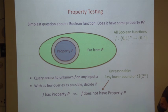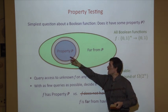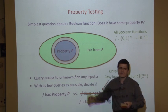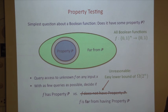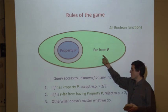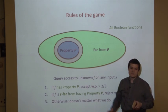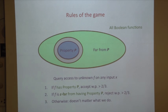In property testing, we relax things a little bit. We give ourselves a promise: we only have to worry about the case where either the function has the property or it's far from having the property. We don't worry about the intermediate regime where the function is close to having the property but doesn't quite. We're given black-box access to an unknown function and promised it either has the property or is epsilon-far from having it, and we should distinguish which is the case with high probability.